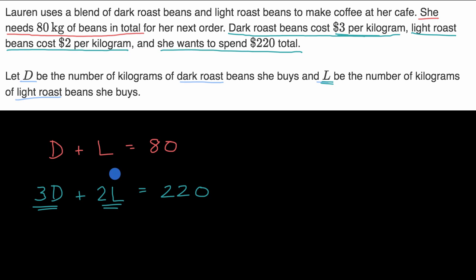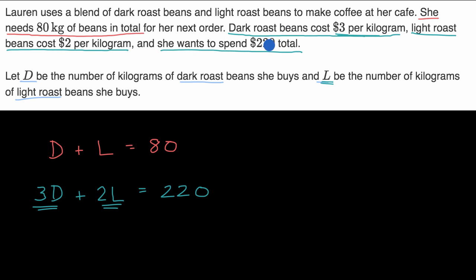But you can do that outside of this video. The whole point of this video is to understand how to construct these equations based on the constraints — based on the information we see. Typically, when you're trying to set these up, there's often a sentence or two that will focus on one equation. The first one says: let's add up the kilograms for the total number of kilograms. And then there's another sentence or two that focuses on another equation — in this case, the price. So the price of the dark plus the price of the light is going to equal the total amount she wants to spend.